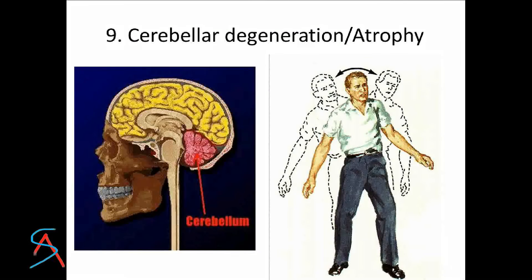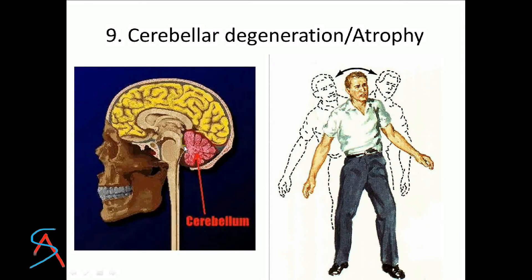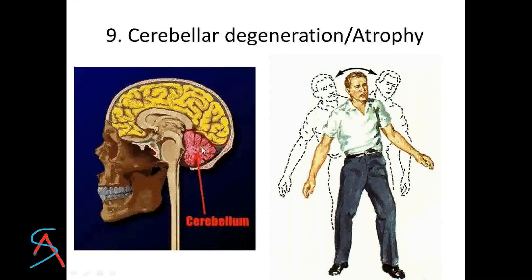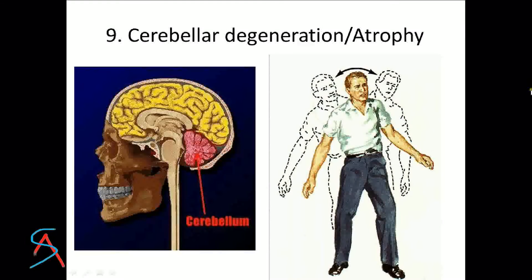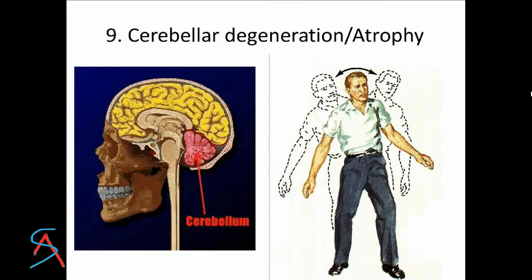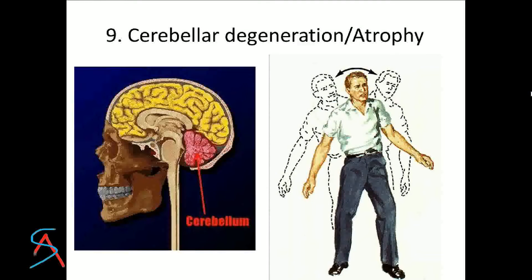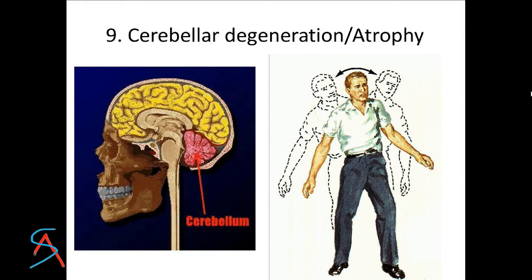Next is cerebral degeneration or atrophy. The cerebellum — shown here in pink color inside the brain — controls the motion and position of your body. If it is atrophied or degenerated, the person will be swinging around and won't be able to walk straight or maintain their body posture.